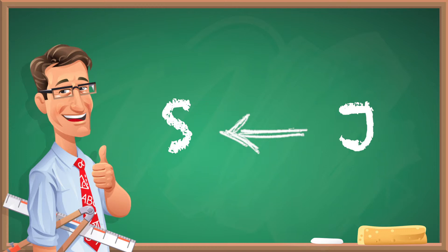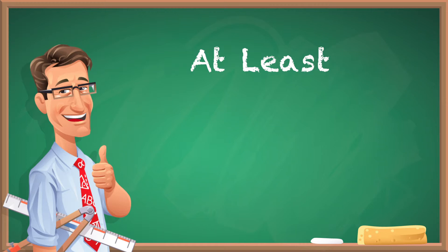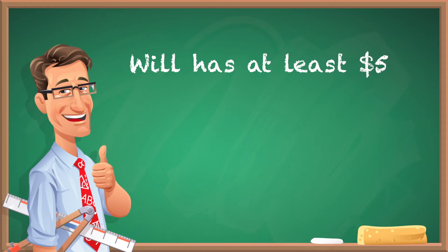If you see a phrase that says at least, that means you're gonna have greater than or equal to that amount. So if you see a phrase that says Will has at least five dollars, you write it as W is greater than or equal to five. Just make sure that alligator's mouth is facing toward W.